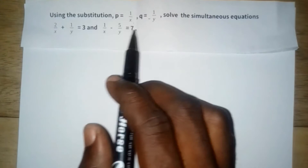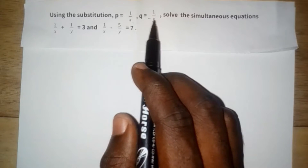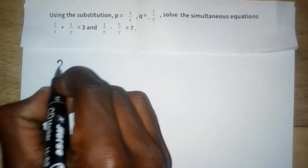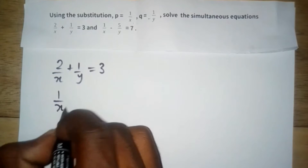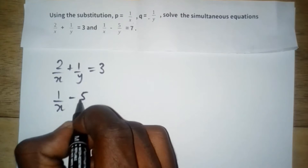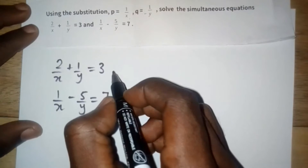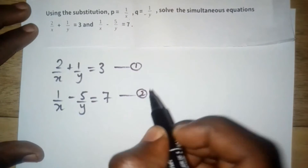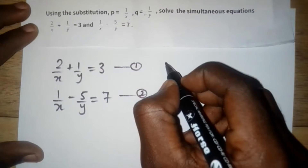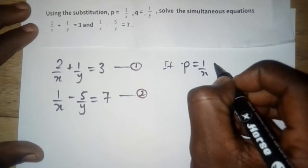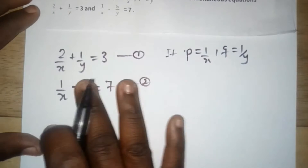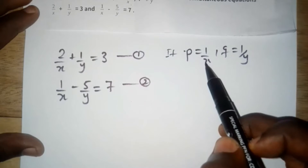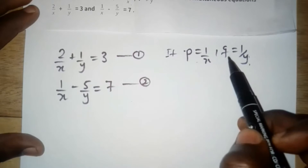Let's solve this question. We have p equal to 1 over x, q equal to 1 over y. We have the first equation: 2 over x plus 1 over y equals 3. We also have 1 over x minus 5 over y equals 7. This is equation 1 and this is equation 2. Since p equals 1 over x and q equals 1 over y, we need to substitute these into the equations, rewriting them so we can replace 1 over x and 1 over y with p and q.